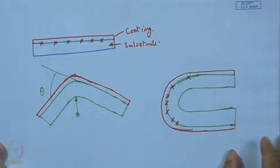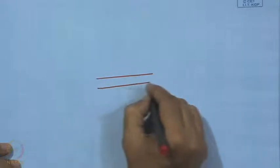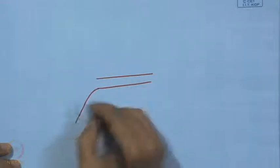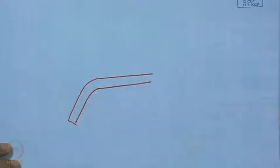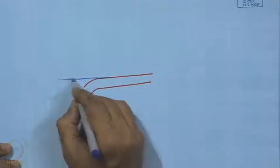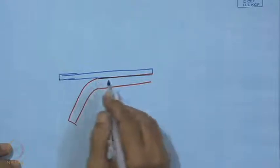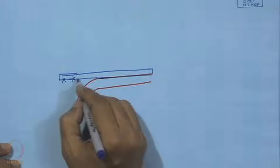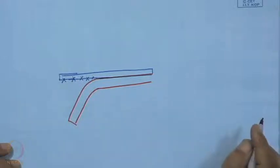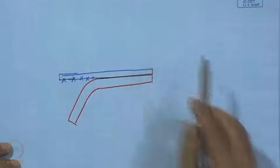We can illustrate the separation of the coating: the substrate has undergone some bending, but the coating does not remain bonded — it gets separated from the substrate surface in that area. This is a case where we do not have the best value of adhesion.